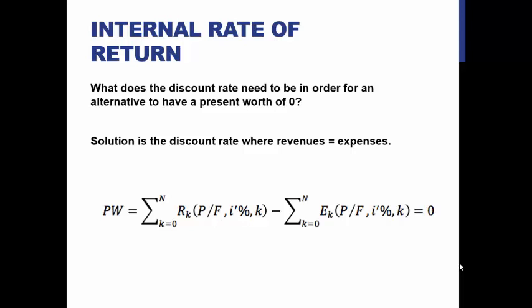Present worth of the project equals zero. That means the sum of the total revenue and the sum of the total expenses are equal.